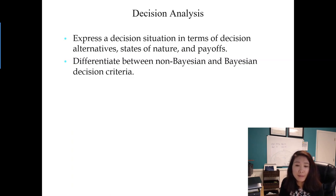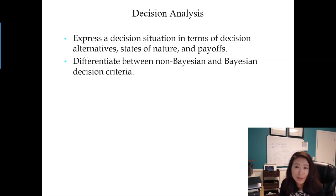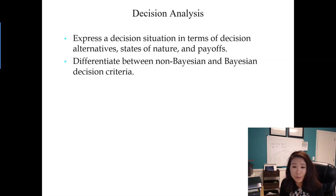The non-Bayesian method means you are not relying on probability to make a decision. In the business world we often face uncertainty, and even if you have a probability it might be out of date, or in some situations you won't be able to get a probability at all. The Bayesian decision criterion is used when you do have credible probability — for example, if you hire a consulting firm that provides probability information, you use those probabilities to help make your decision.